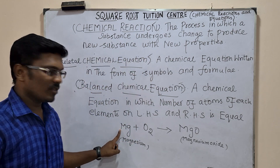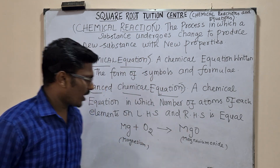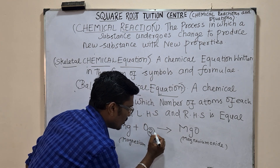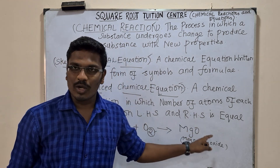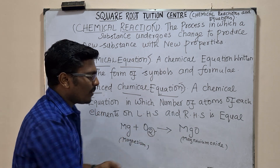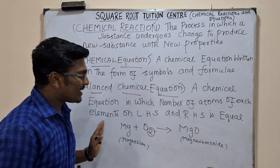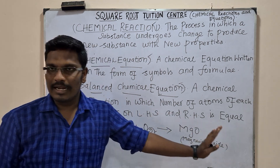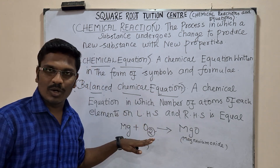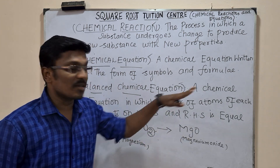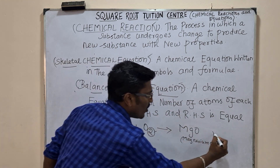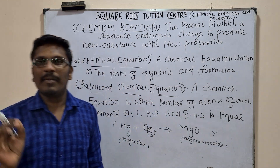On the LHS we have Mg and O₂ — there are two oxygen molecules but only one magnesium molecule. We collect the reactants on the LHS and the products on the RHS, but it is not balanced. The number of atoms on the LHS does not equal the RHS. This is an example of a skeletal chemical equation.